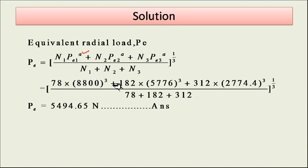Then 182 × 5776^3, then 312 × 2774.4^3, divided by (N1 + N2 + N3) whole raised to power 1/3. I am getting this value of Pe equal to 5494.65 newton. This is the solution of this particular numerical. Thank you very much.